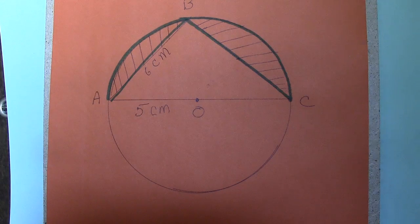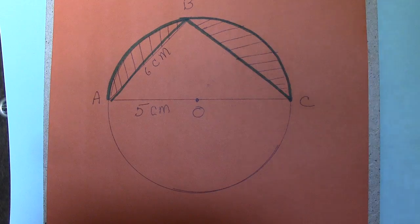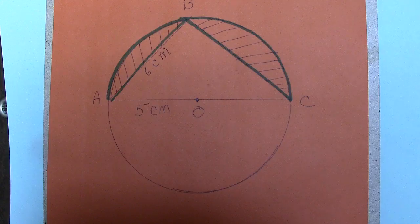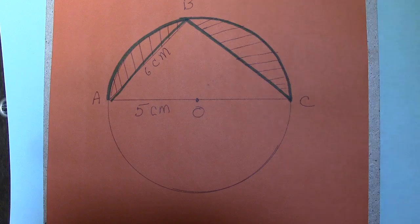We are given the radius of the circle as 5 cm. The side AB is 6 cm. And we are asked to calculate the perimeter of the shaded portion.